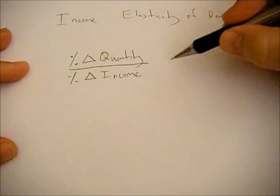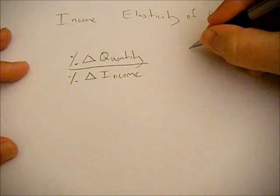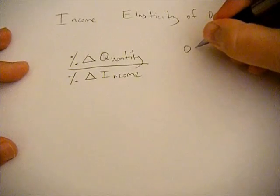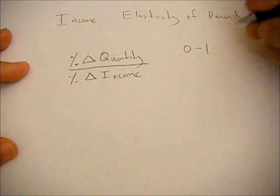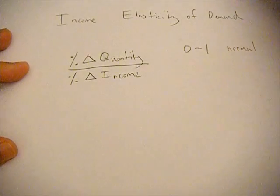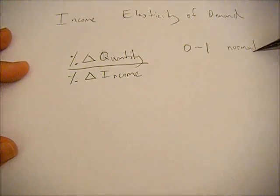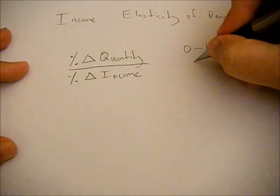If you end up getting an income elasticity of demand between zero and one, we consider that a normal good because as your income rises you consume more of the good.